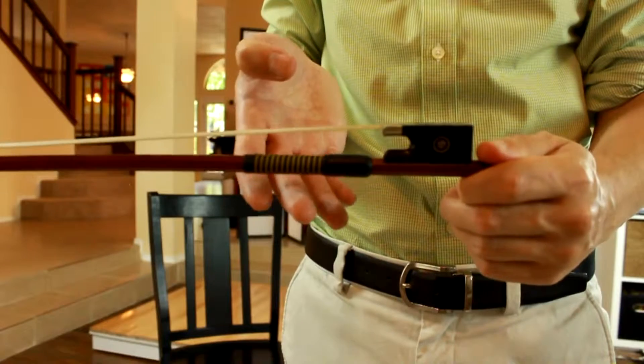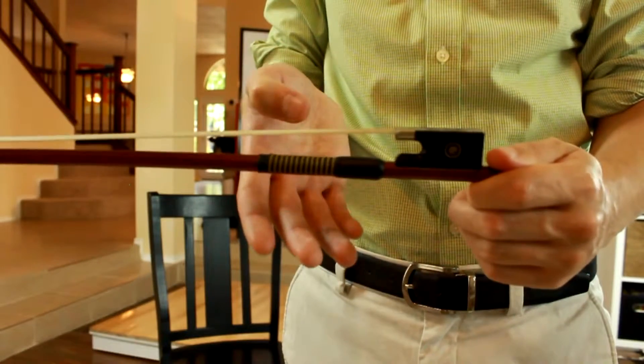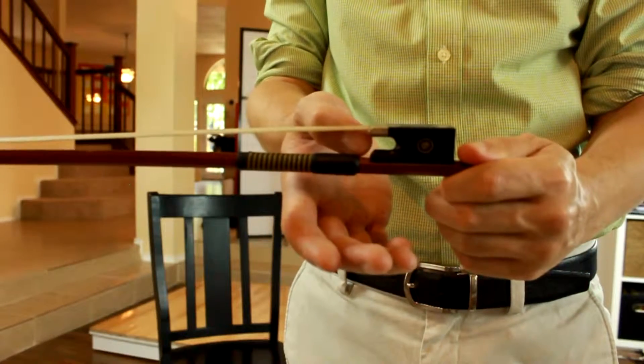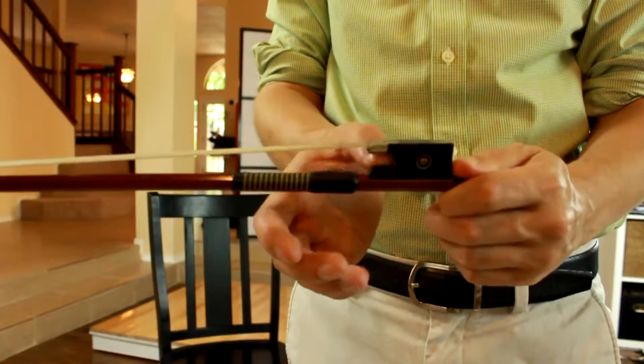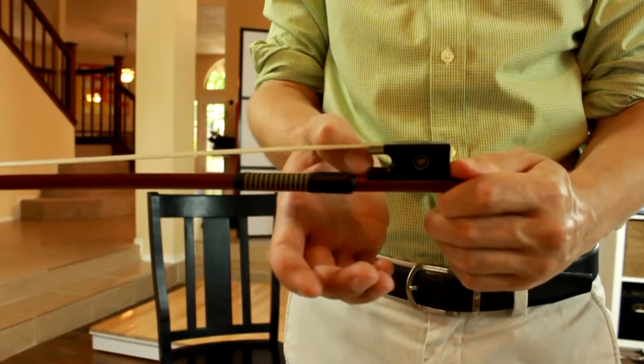I'm going to take a curved thumb, a bent thumb, and I'm going to put it right inside this little crease here against the frog. Not inside, but against the frog.